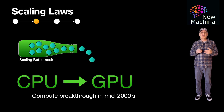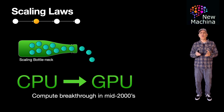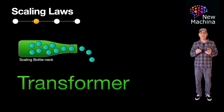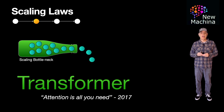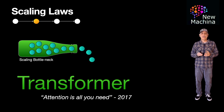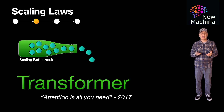In more recent years, there have been examples of bottlenecks which were overcome with innovations in model architecture. A big example of this was the introduction of the transformer architecture in 2017 by Google researchers. You can read more about this in their seminal paper, Attention Is All You Need — I've included a link to this paper in the YouTube description. In this case, innovation in model architecture overcame a scaling bottleneck and shifted the scaling curve once again.